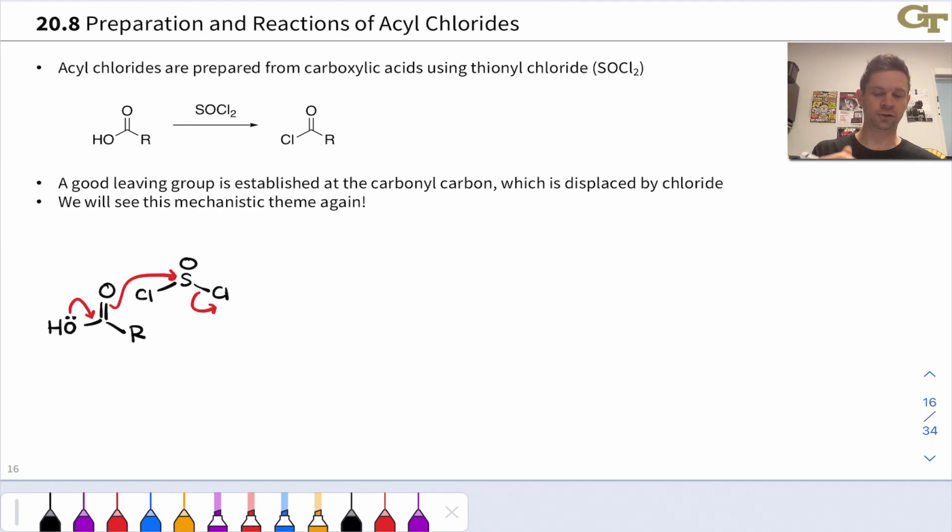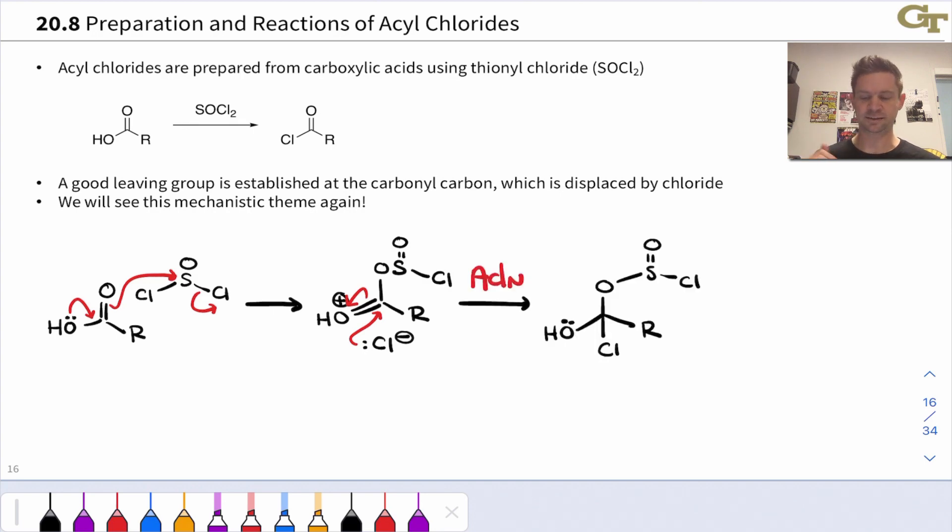This occurs through coordination of the carbonyl oxygen to sulfur with displacement of chloride followed by a nucleophilic addition of the chloride into the carbonyl carbon. This makes the carbon chlorine bond. This is a key step this nucleophilic addition and we have a tetrahedral intermediate here. This tetrahedral intermediate can eliminate off this leaving group and ultimately we get SO2 which is a gas and chloride as the byproducts here.